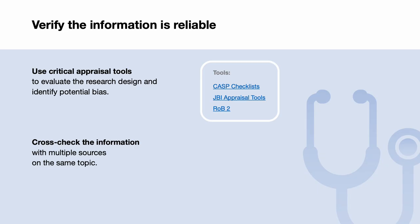Verify the information is reliable using critical appraisal tools to evaluate the research design and identify potential bias. Explore the recommended tools for critical appraisal. To confirm accuracy, cross-check the information with multiple sources on the same topic.